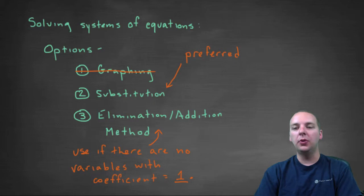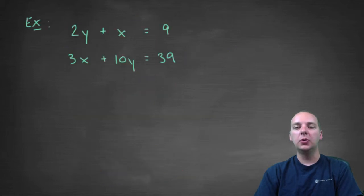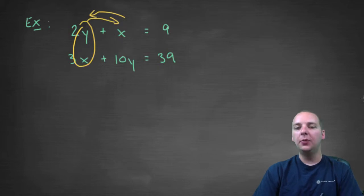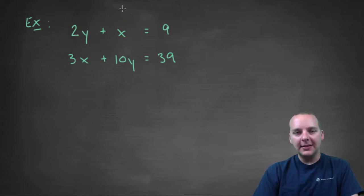If you really wanted to do the elimination method, you could probably do that too, but these are just my recommendations. Alright, so let's try two examples and we'll talk about which method we would choose and why. So here's an example: 2y + x = 9 and 3x + 10y = 39. Now, it's not already in standard form because the x's and the y's aren't lined up. We would need to shuffle some terms around if we wanted to do the elimination method, which won't be hard. But see this guy right here, the first thing I noticed when I looked at this example is that x has a coefficient of one, which means I'm probably going to do the substitution method because that's going to be the preferred way of doing it.